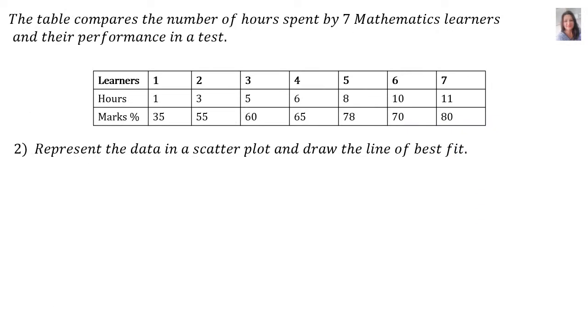The second question wants us to represent the data in a scatter plot and draw the line of best fit. To do that, we need the calculator and there's only two points that we will investigate. The first point will be the y-intercept, which you find from the equation of the line of best fit. And then there's the mean point, x bar, y bar. Once you know the two points, you will join them and then there's your line of best fit.